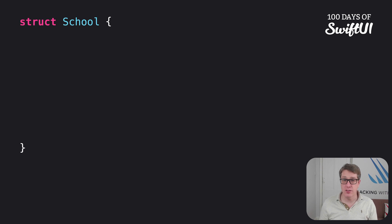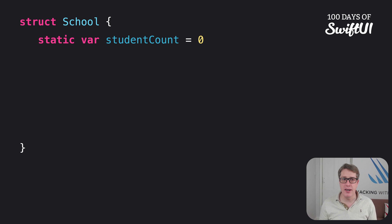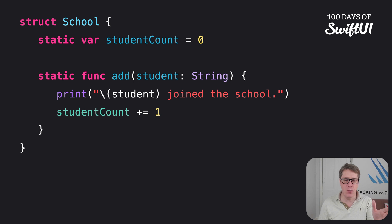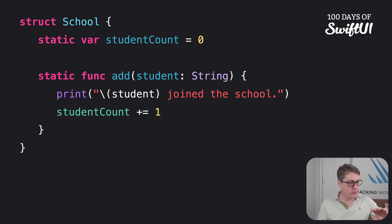We could say there's a struct called School. This has one static property, a variable called studentCount equal to zero, and also a static method called add, which takes a student string, prints out the joined, and adds one to studentCount. Notice the static keyword here. This means both studentCount and the add method belong to the school struct itself, not to an individual instance of a school.